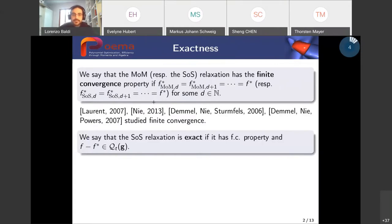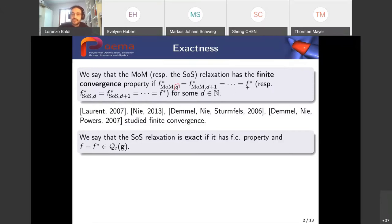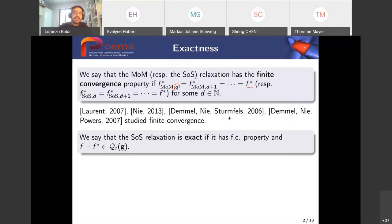Let me recall the definition of finite convergence. We say that the moment or sum of squares relaxation has finite convergence if at some order d of the relaxation we reach the infimum F star of our objective function. There has been work by Loran, Nie, Sturmfels, and others to determine finite convergence in some cases — for instance, if we have a finite real variety, or using the gradient ideal in global optimization, or the KKT ideal in constrained optimization.